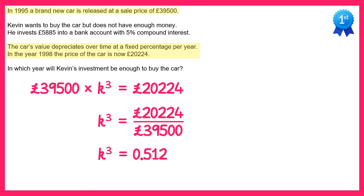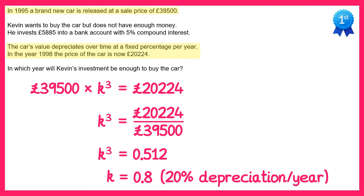To find the value of K you cube root both sides, and that gives you K equals 0.8. You should recognise this multiplier of 0.8 as a 20% depreciation per year. So we now know the car will depreciate at a rate of 20% per year.